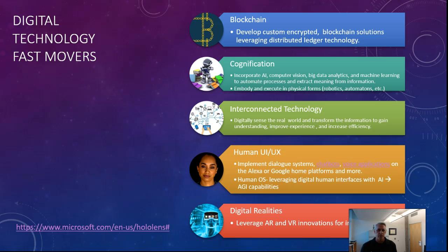Also, how do we embody and execute in physical forms? If we want to have this cognification but in a physical form, that's when we get to robotics and automation, where that data is not only being acted on, it actually interacts with the world.